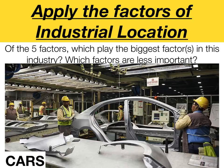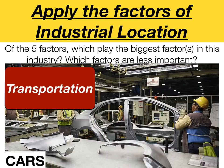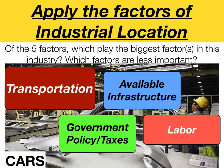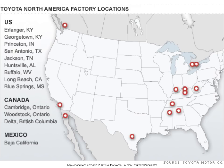What about cars? Transportation is still a major factor because cars are very heavy to transport. However, other factors like available infrastructure, government policy, taxes, and labor also matter. If transportation is such a big factor, we would predict that Japanese and German car companies would locate factories in North America because our market is so large. And that is true — Toyota has factory locations in North America, including one in Canada, one in Mexico, and several in the United States, particularly in the southern Sunbelt region due to lower labor costs from fewer unions, lower state taxes, and available infrastructure.